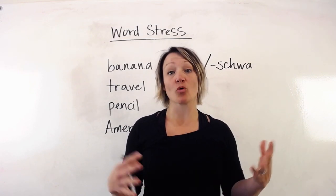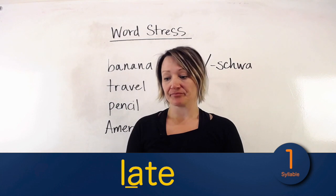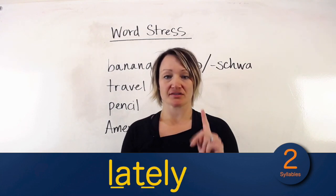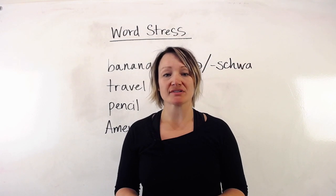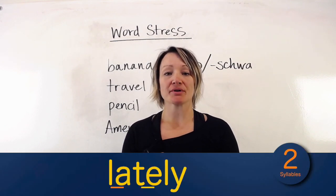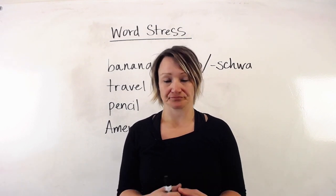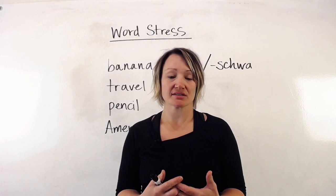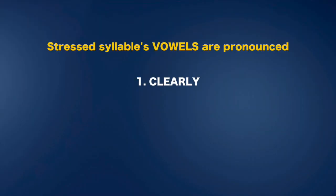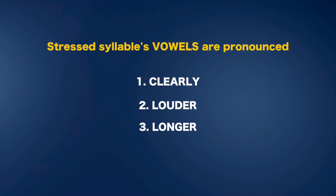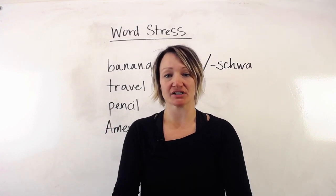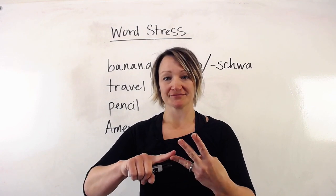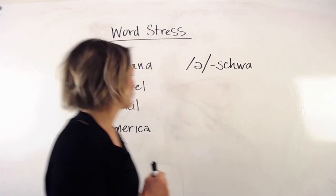In words that have two or more syllables — for example, 'late' has one syllable, 'lately' has two syllables — we pronounce the first syllable more strongly. The way we stress syllables is that we say the vowel clearly, and sometimes louder. The three characteristics of a stressed syllable in English are: longer, clearer, and louder.